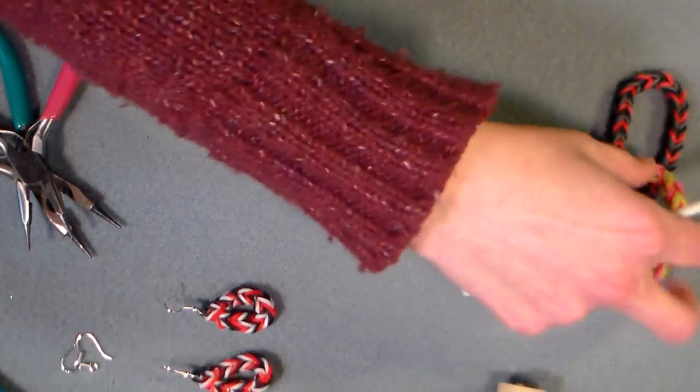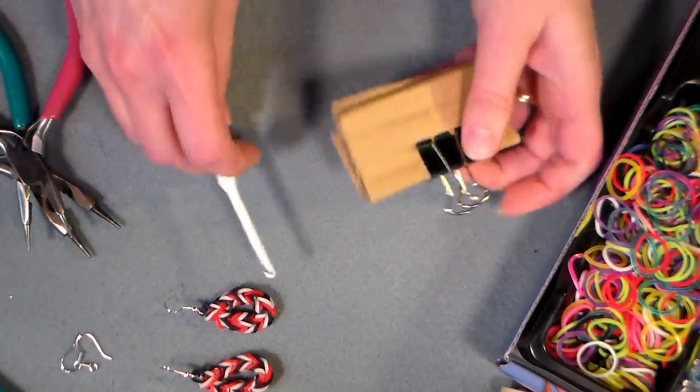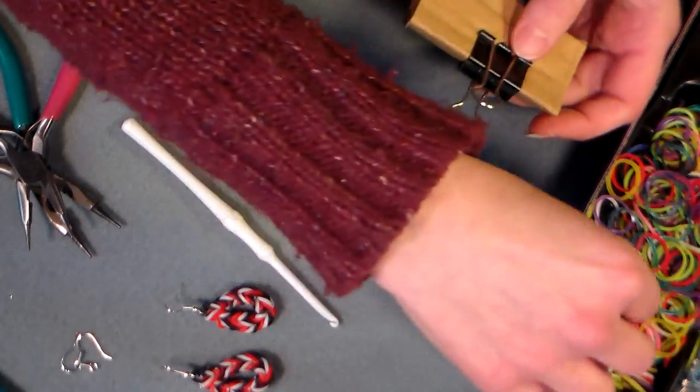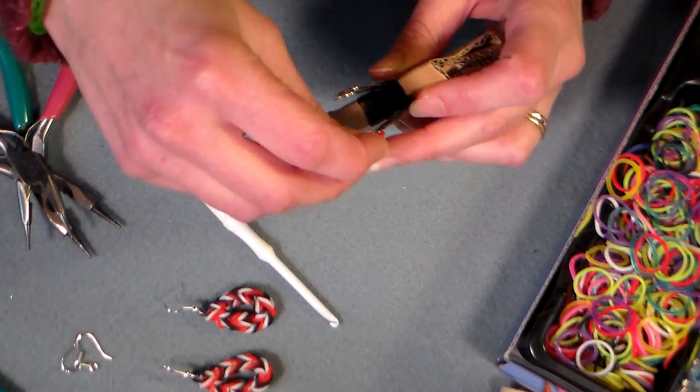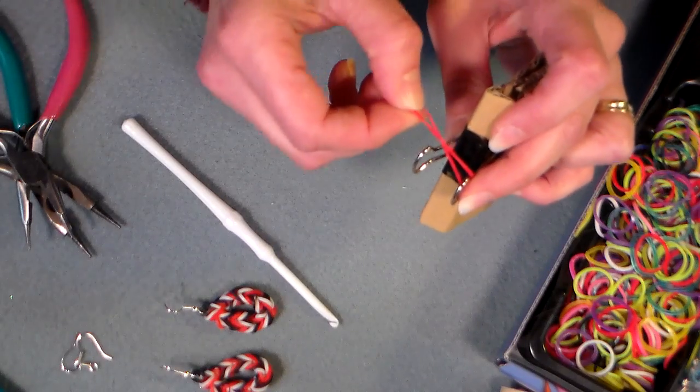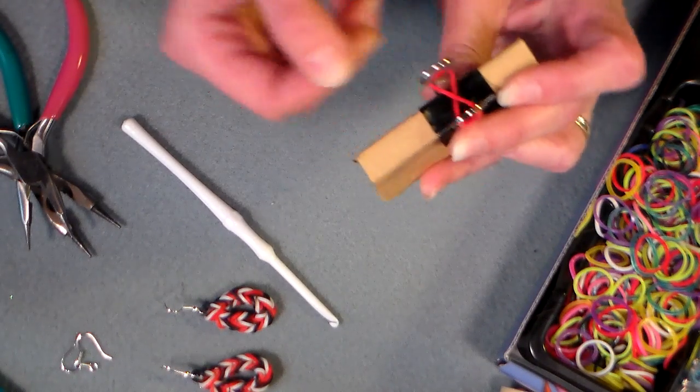Alright, so you need some loops, you can use whatever colors you like. We're gonna do a three color pattern here, I think I'll start with red. The first loop that you put on, you're gonna twist it, so you're gonna put it on one leg of the loom, twist it, and put it over the other.